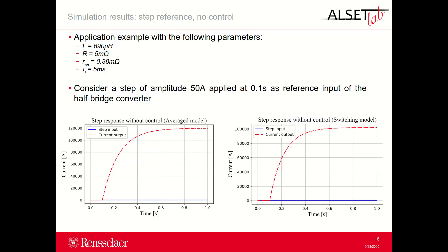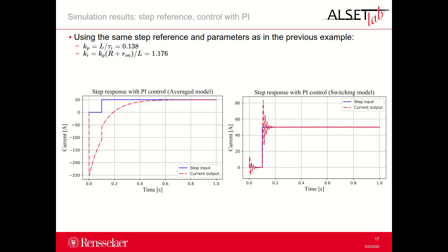In this section the simulation results are presented. The parameters of the system are indicated at the top of the slide. We start with the results obtained using a step signal as a reference. As we can see, the AC output current does not track the step input for both systems with the average and switching model of the half-bridge converter. The final value of the output AC current is much higher than the step input, which cannot be clearly seen in the plots due to the big difference of magnitudes of the two curves. Introducing PI control with the parameters indicated in the slide, we can see that now the system is able to settle at the value corresponding to the step input value. The initial negative overshoot of the current for the case of the average model is due to the initial conditions of the system. With the switching model there are some oscillations of the output current at the initialization of the system when the step is applied.